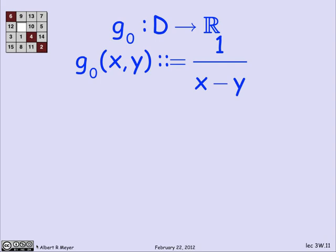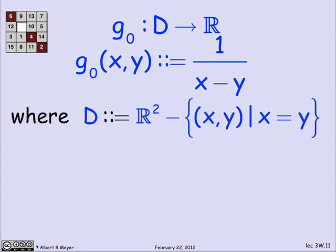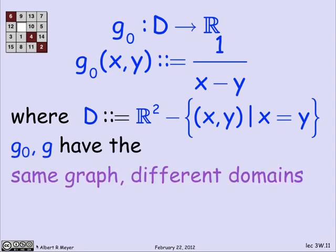OK. Let's look at a slight variation. This is function g0 that goes from some unspecified domain. I'll specify it in a minute to the reals. It has exactly the same formula. g of xy is 1 over x minus y. But now I'm going to tell you that the domain, instead of being all the reals, is the reals except for that 45 degree line. I just want to get rid of the bad points and not worry about them.